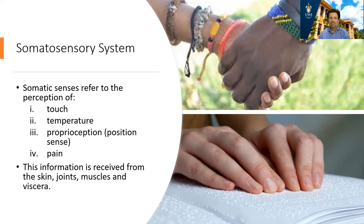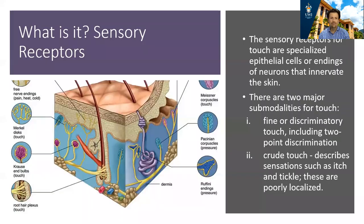We'll be focusing today primarily on touch and temperature. The first question is: what is it? You remember that what is it is dependent upon the type of sensory receptors. Within the somatosensory system, our sensory receptors are modified epithelial cells that are found within the skin.